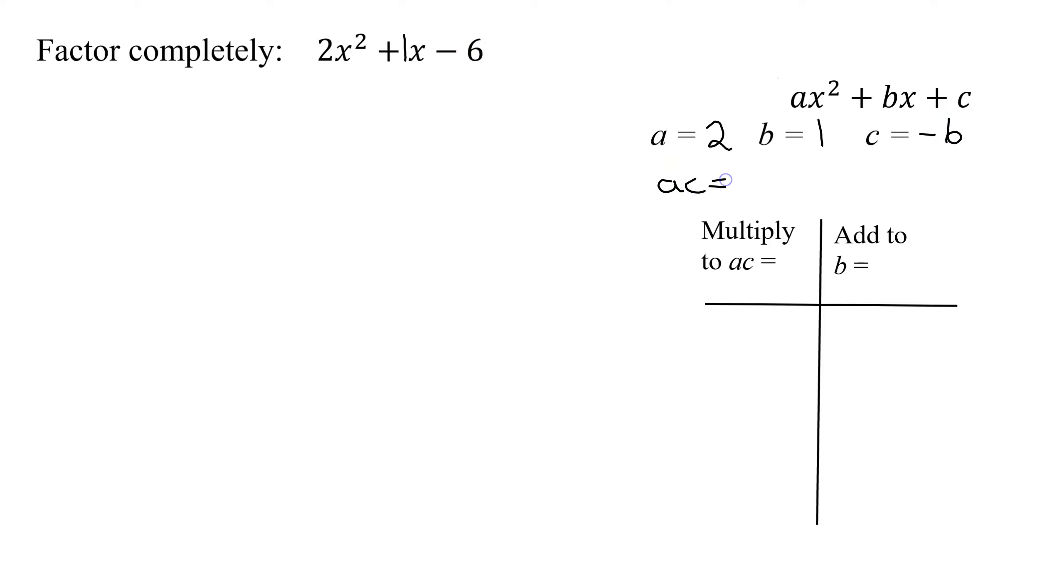So a times c is 2 times negative 6, which is negative 12. So I need two numbers that multiply to ac, which is negative 12, and they add to the b term, which is positive 1.